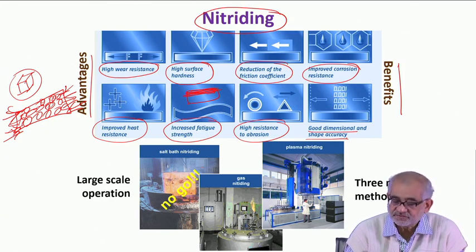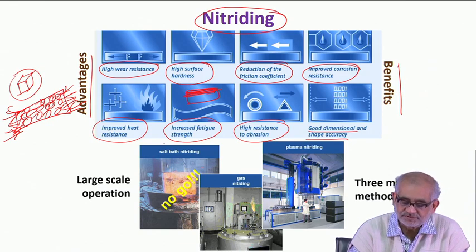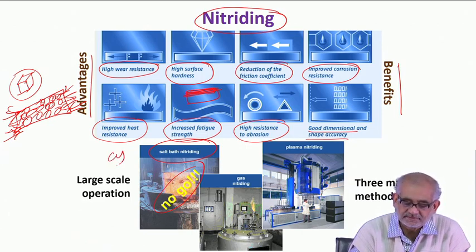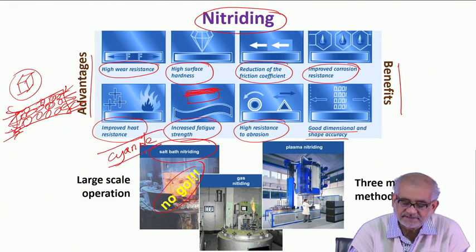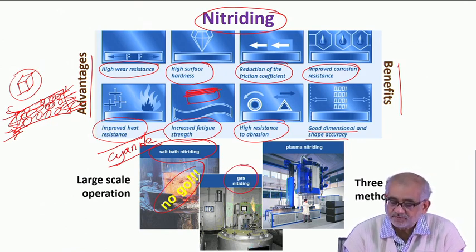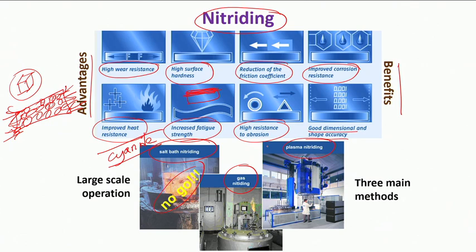Nitriding can be achieved through one of three approaches: salt bath nitriding, which is generally avoided because it involves cyanide baths; gas nitriding, which is very popular; and plasma nitriding, which is even more popular and effective. Today we are discussing gas nitriding, and we will also discuss plasma nitriding shortly. These are the three methods of large-scale nitriding operations.